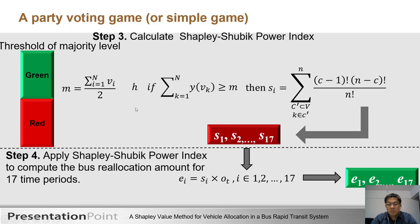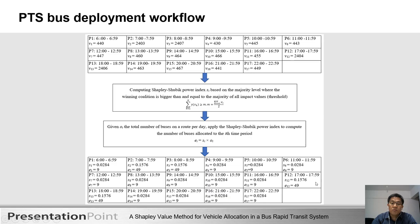Step 3: Calculate the Shapley-Shubik power index. The threshold value N is half of the total number of passengers. A coalition is found to be a winning coalition when the summation of the impact values of the time periods passes the threshold majority level, producing the Shapley-Shubik power index for each player. Step 4: Use the power index to allocate the number of BRT buses for the 17 periods from E1 to E17 for the F1 bus route schedule.